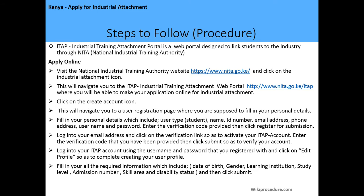ITAP, the Industrial Training Attachment Portal, is a web portal designed to link students to the industry through the National Industrial Training Authority, and the application is done online. First, visit the National Industrial Training Authority website and click on the Industrial Attachment icon. This will navigate you to ITAP, where you can make your application online. Click on the 'Create Account' icon to navigate to the user registration page, where you fill in your personal details.